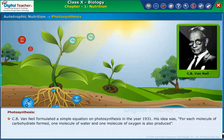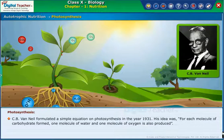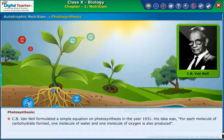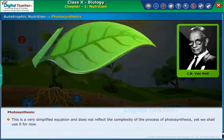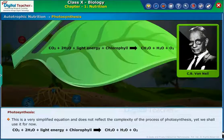CB Van Neel formulated a simple equation on photosynthesis in the year 1931. His idea was that for each molecule of carbohydrate formed, one molecule of water and one molecule of oxygen is also produced. This is a very simplified equation and does not reflect the complexity of the process of photosynthesis.